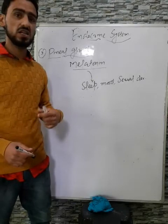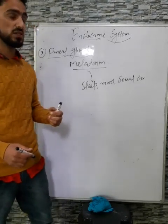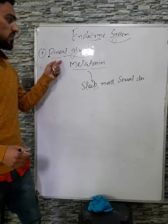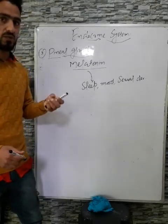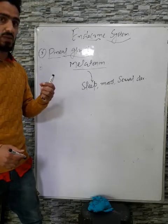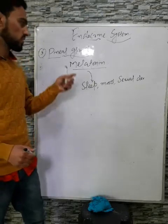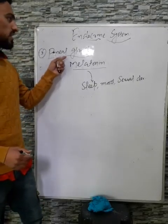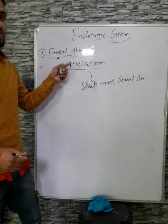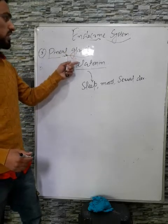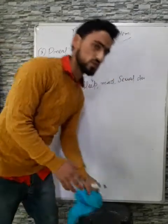The pineal gland is also known as the third eye. It detects light through the eyes — our eyes receive light and send it via the optic nerve to the pineal gland. Whenever there is darkness, melatonin is secreted, making us feel sleepy. That was all about melatonin.